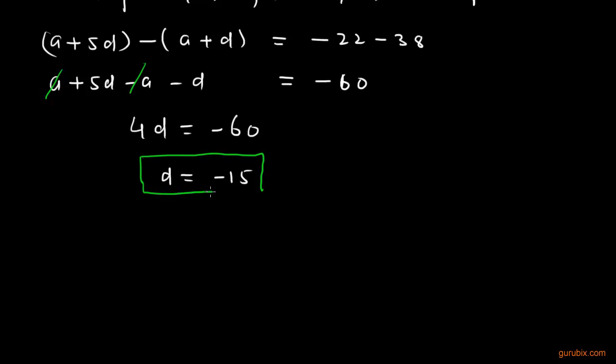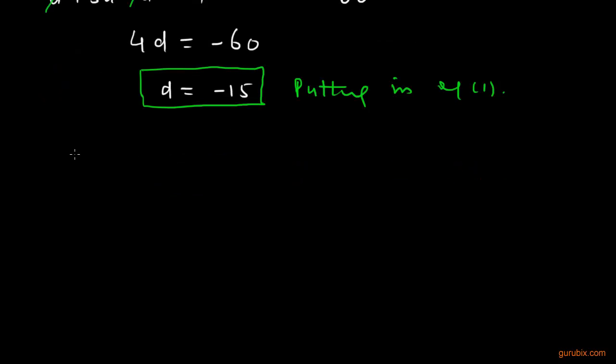Now we shall put this common difference d in equation number 1 to get the value of a. Putting in equation 1, we get a plus minus 15 equals to 38, and we get 53. Therefore, the value of the first term is positive 53.